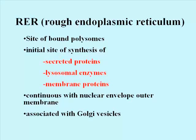In eukaryotic cells, bound ribosomes are attached to membranes of the rough endoplasmic reticulum, or RER, which is actually continuous with the outer membrane of the nuclear envelope. The RER is typically situated in cells near the nucleus on the one hand, and near Golgi vesicles on the other.